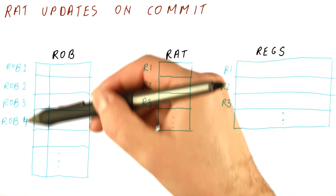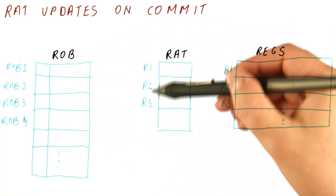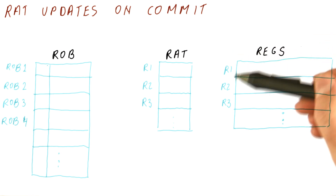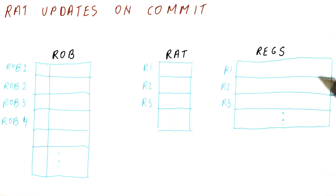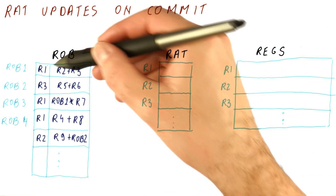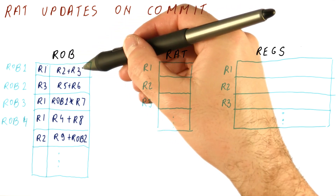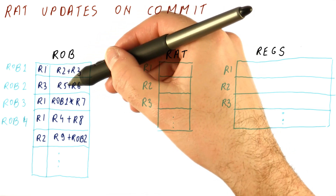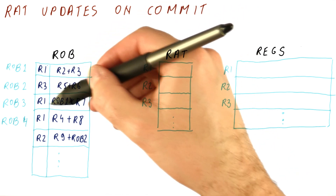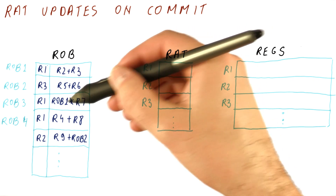This is our ROB, this is our register allocation table, and this is our set of registers. Our instructions are: R1 equals R2 plus R3, R3 equals R5 plus R6, and R1 equals ROB1 times R7.